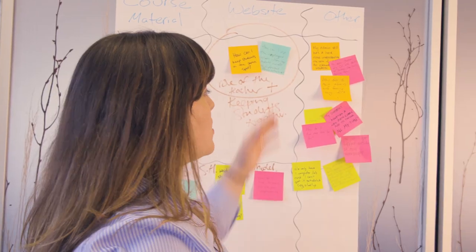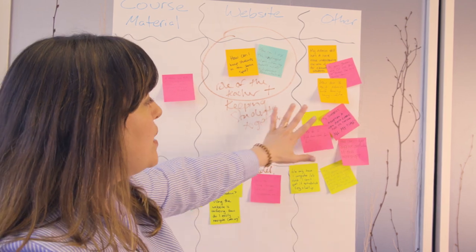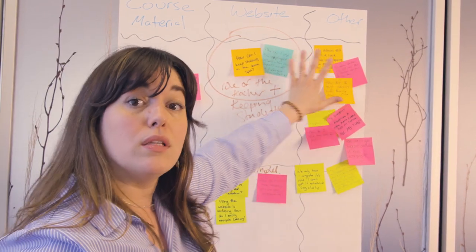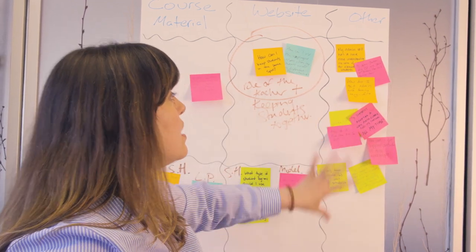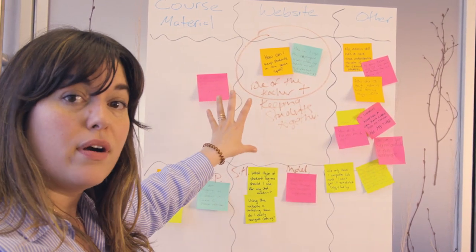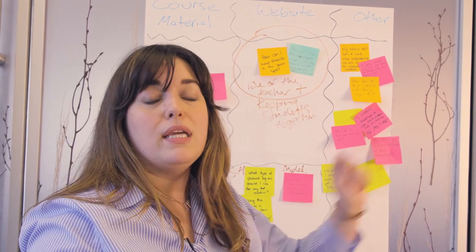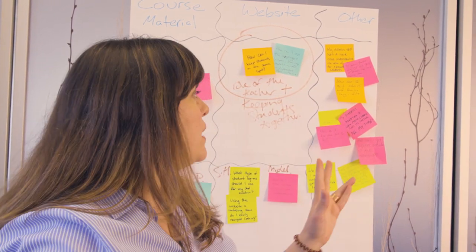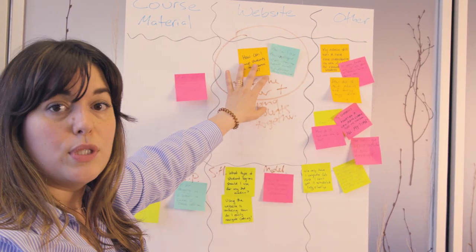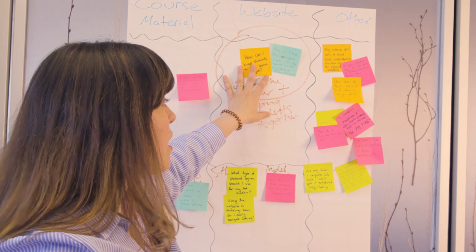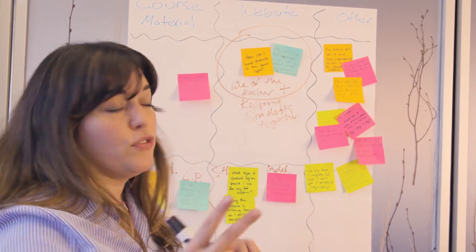This takes us to our final category — the catch-all called 'other.' When we get to the other category, we're going to look back at everything we've done to see if any of these things slot in nicely with what we've already clustered. If they don't, we'll start making new categories. As a reminder, we're trying to come up with four circled buckets for the upcoming jigsaw activity, and so far we've identified two — so we're really looking for two more.